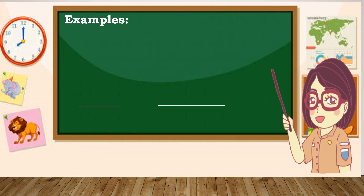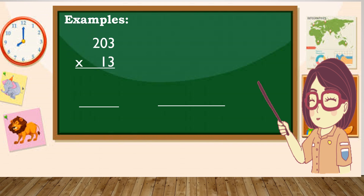Another example is 203 times 13. Sundin lamang ang nabanggit na steps kanina at makukuha mo agad ang product. So multiply muna natin: 3 times 3 is 9, 3 times 0 is 0 — lagi pong tatandaan, lahat ng number na kapag minultiply natin sa 0 ang sagot ay laging 0. Then 3 times 2 is 6. So 609 is our first partial product.